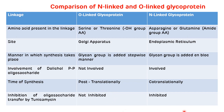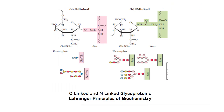This slide shows the difference between N-linked and O-linked glycoproteins. The major difference is that in O-linked glycoproteins, hydroxyl group-containing amino acids such as serine and threonine are present, while in N-linked glycoproteins, amide group-containing amino acids such as asparagine are present. This picture shows the structure of both O-linked and N-linked glycoproteins as discussed.